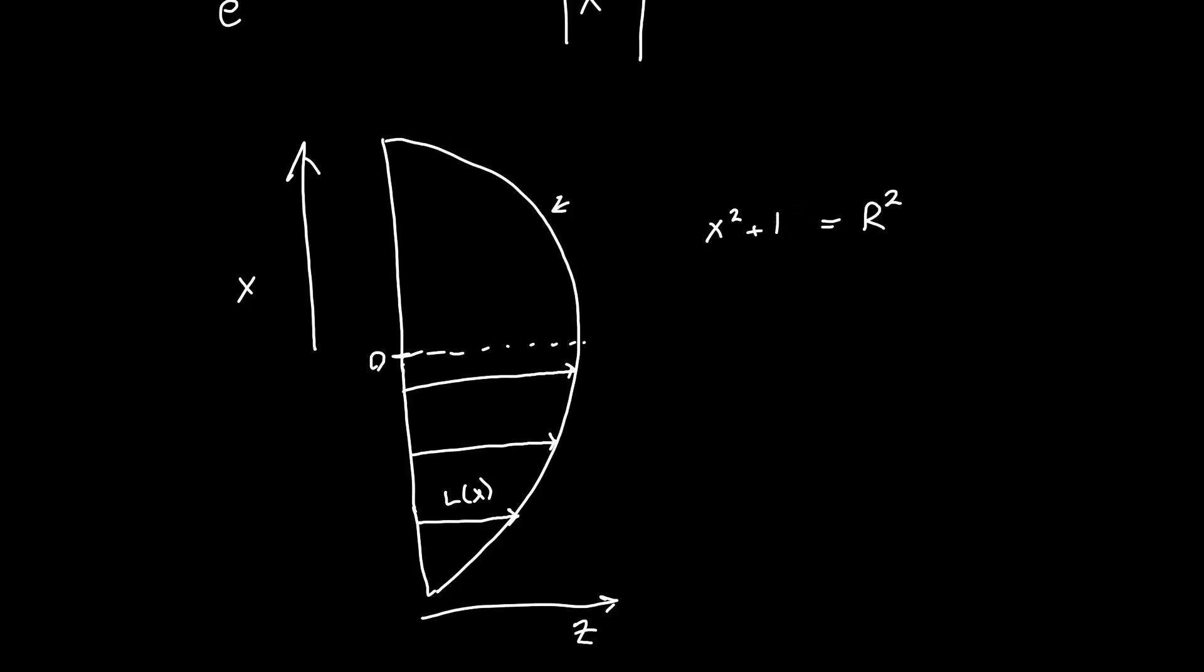So x squared plus l of x squared equals r squared, or moving the x squared to the other side and taking the square root, we just get that l of x is r squared minus x squared. Strictly speaking, there should be a plus or minus, but we're only going to worry about positive lengths here. We can factor out the r to make this r times 1 minus x squared over r squared.